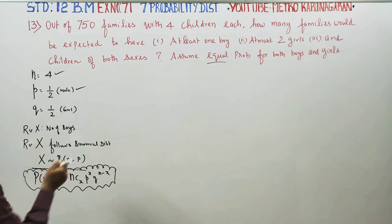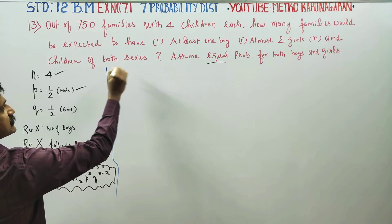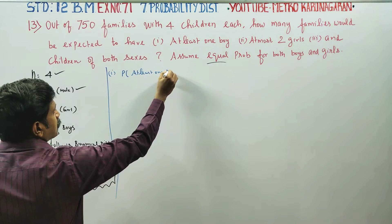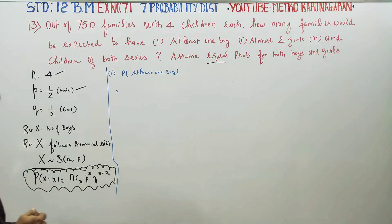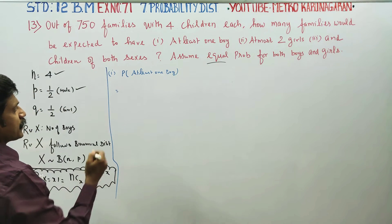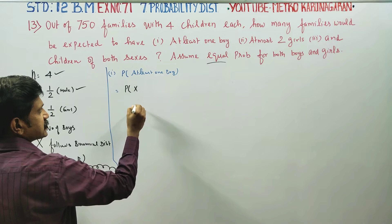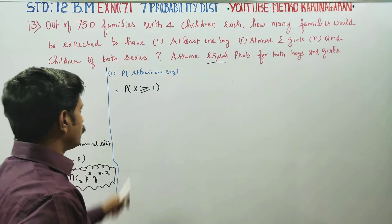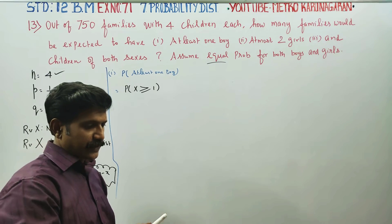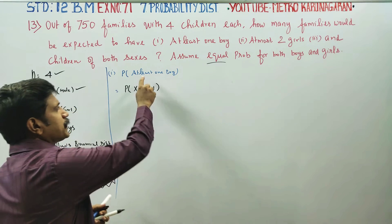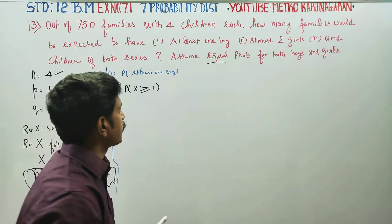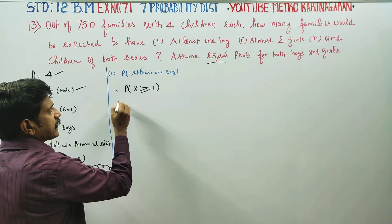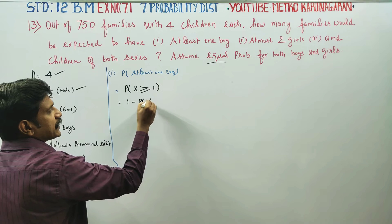First, we will solve for at least one boy. The probability of finding at least one boy means P(X ≥ 1), which equals 1 minus P(X less than 1), i.e., 1 minus P(X = 0).